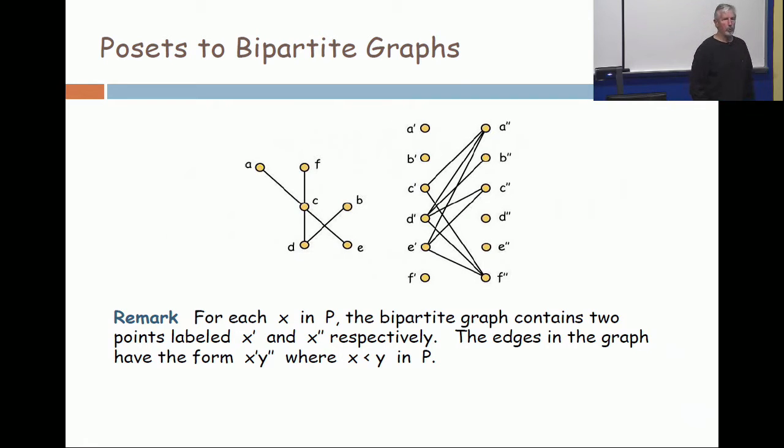On the left I show a poset. It's a little one, only got six elements. On the right I associate with this poset a bipartite graph.